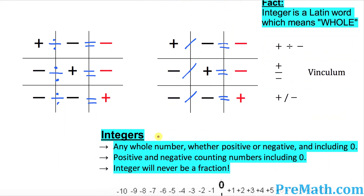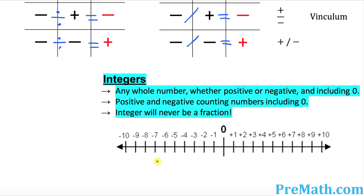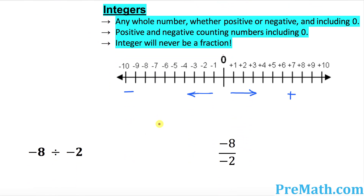Let's go ahead and define integers. Integers are nothing more than just the whole numbers with positive and negative signs, including zero. As you can see on this number line, zero and all the numbers on the right hand side are the counting numbers, so they are all positive. On the left hand side of zero are negative numbers. When you go towards the right the numbers tend to increase, and if you go towards the left they tend to decrease. One more thing: integers will never be a fraction.